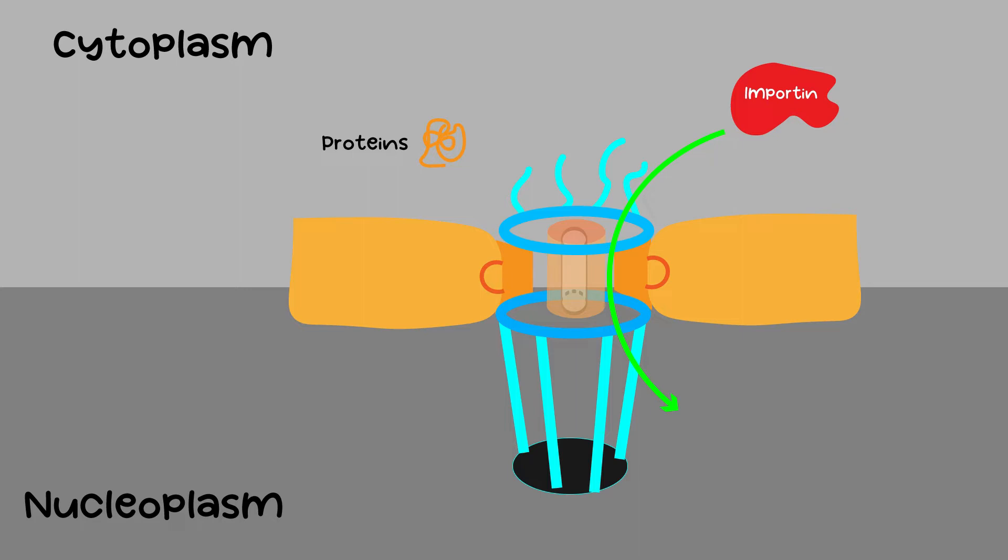The second transport protein is exportin, which exports molecules from the nucleus to the cytoplasm. Importin is found in the cytoplasm, while exportin is found in the nucleoplasm.